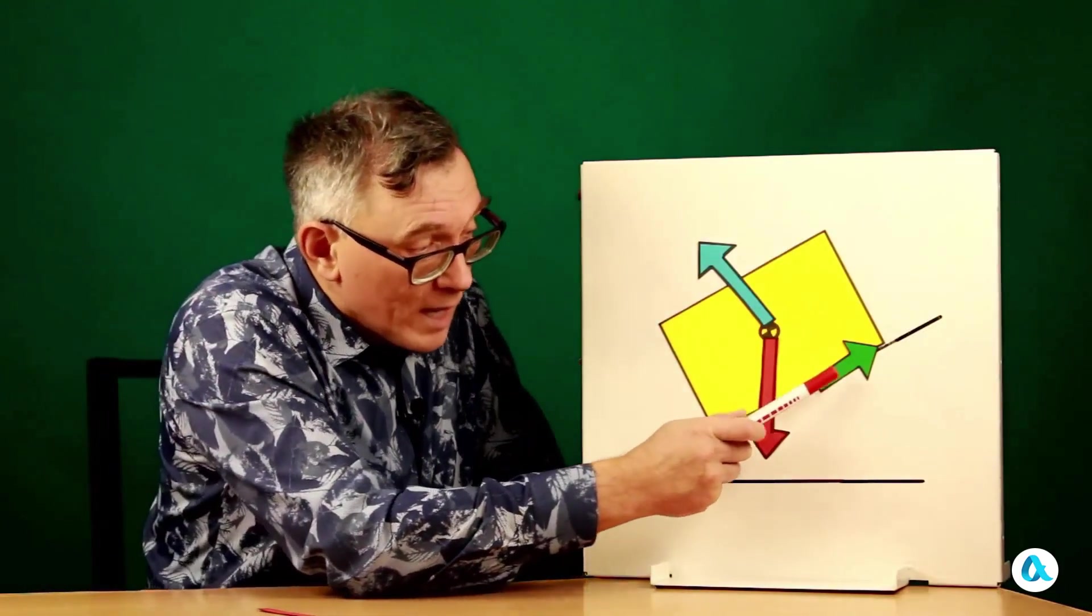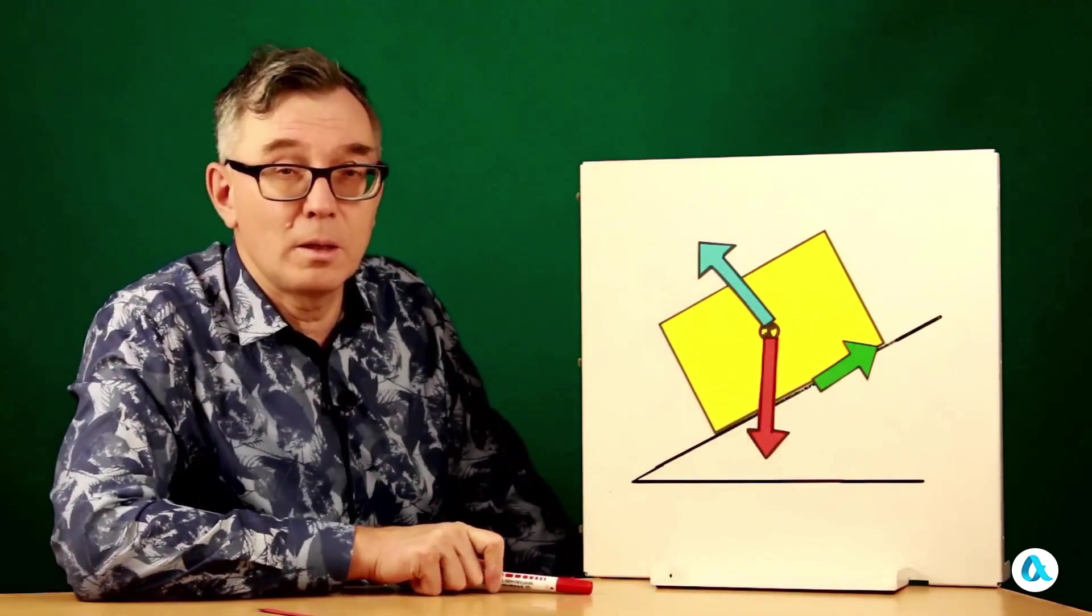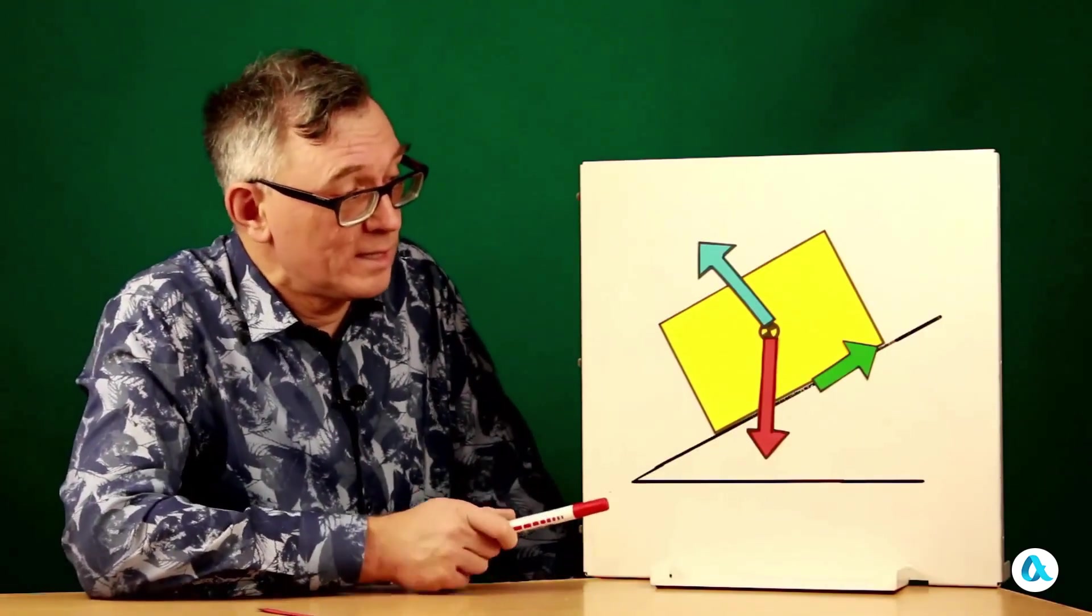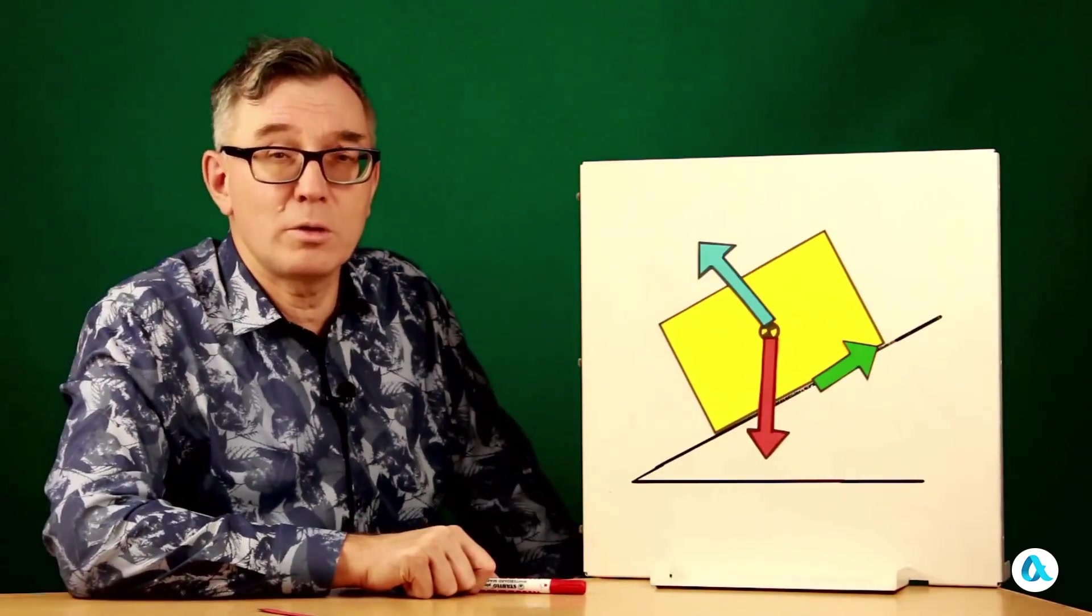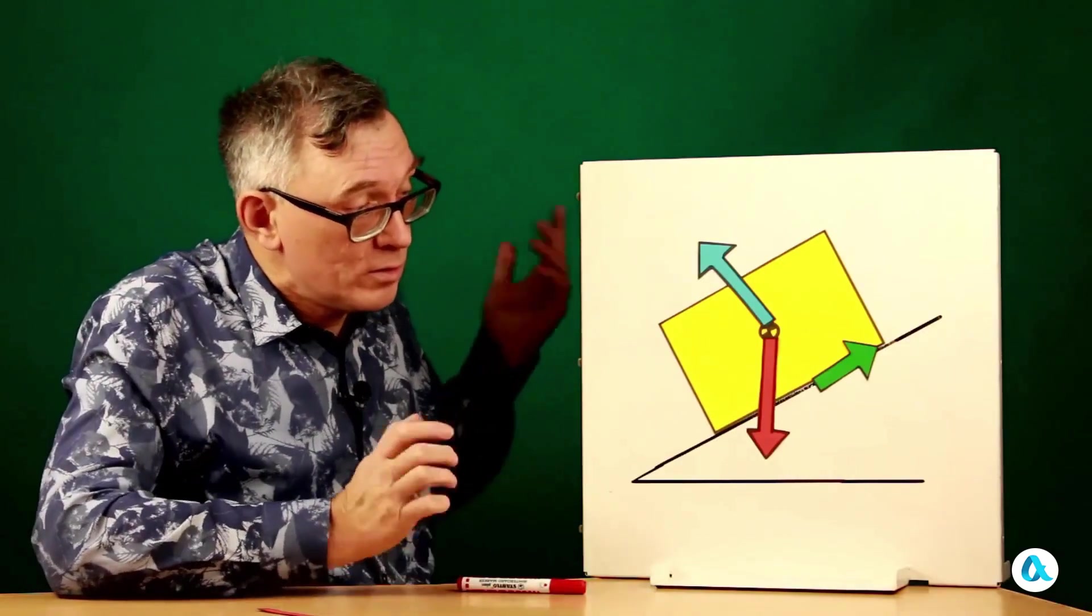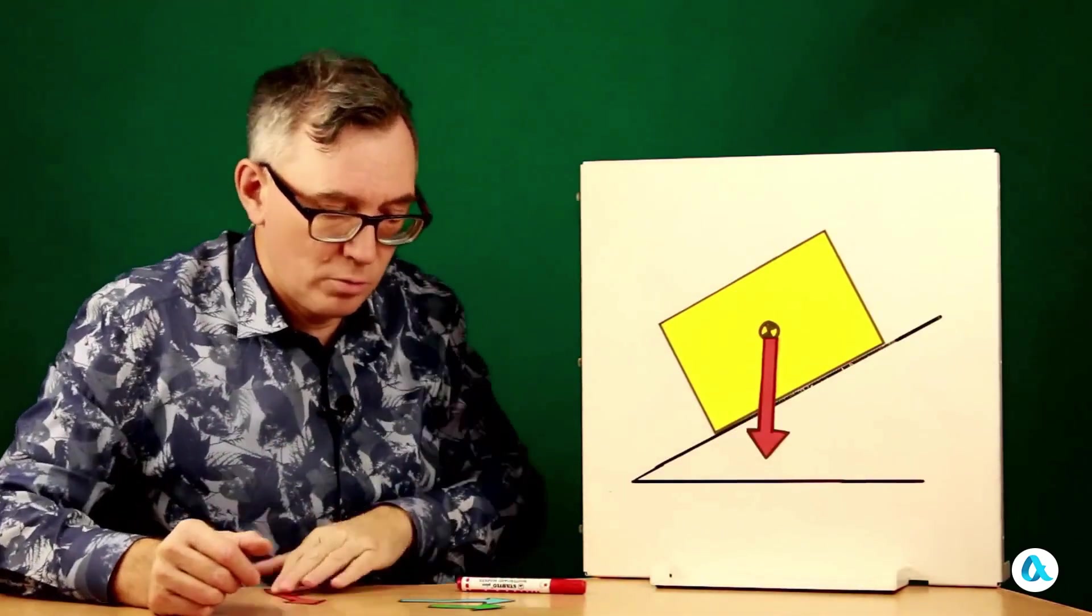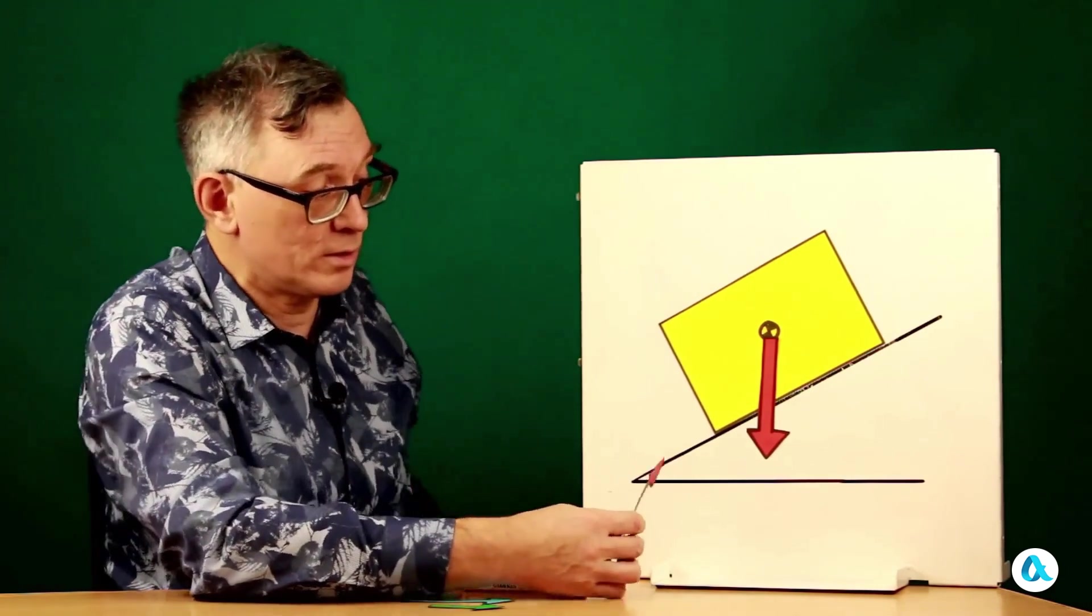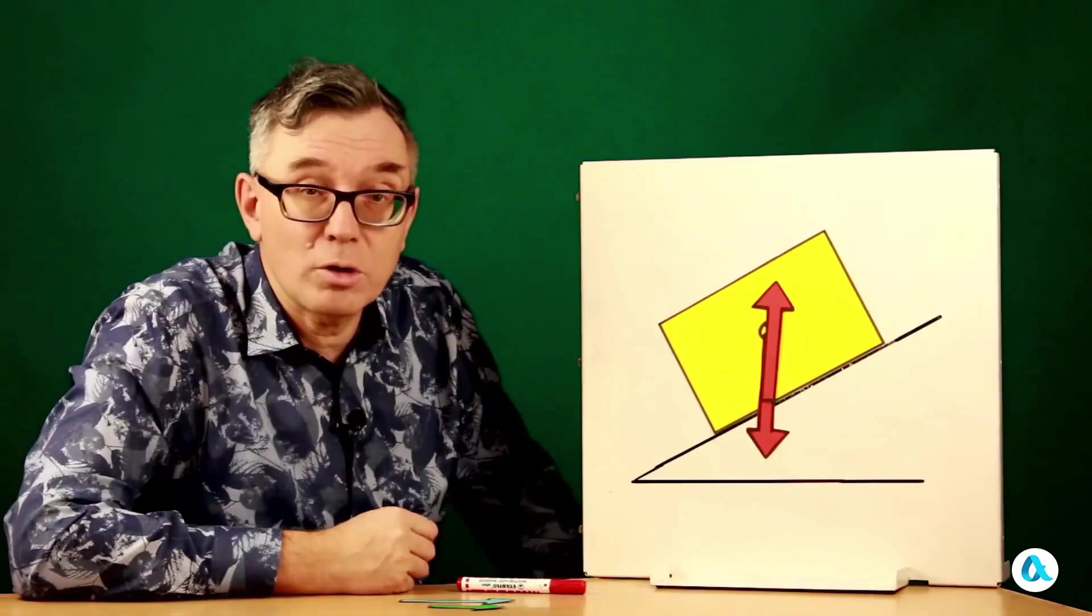So how can we fix this situation? Look, no matter how we move the arrow representing the friction force along the plane, the moment relative to the center of mass will be the same. So the problem lies in how the arrow representing the support reaction is currently drawn. It's not applied in the right place. I'll remove both of these arrows. The total force corresponding to them must be exactly equal to the gravitational force, and be directed along the same straight line, so that there is no rotational moment.